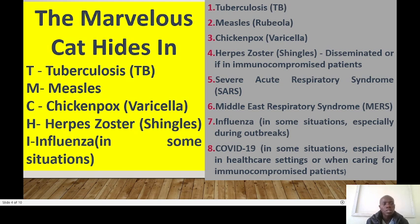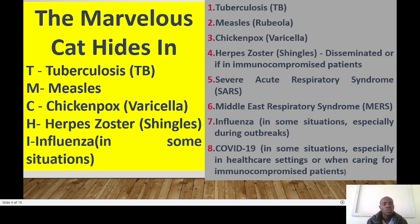We can use the mnemonic 'the marvelous cat hides in,' where T stands for tuberculosis, M is measles, C is chickenpox or varicella, H is herpes zoster or shingles, and I is influenza. Other diseases include COVID-19, Middle East respiratory syndrome (MERS), the SARS virus, and so forth.